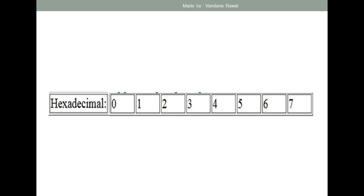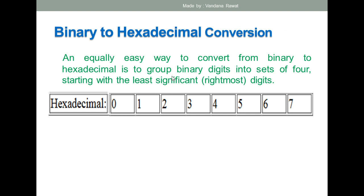Let us start. As you have seen in the previous video lecture on binary to octal conversion, I told you to make a group of binary digits in sets of three. But now, for hexadecimal, you have to represent the binary number in sets of four. So in binary to hexadecimal conversion, we will make groups of binary digits in sets of four. This point is important, so you can underline it.